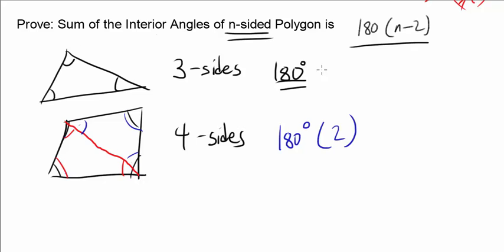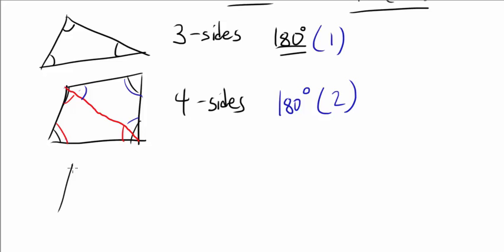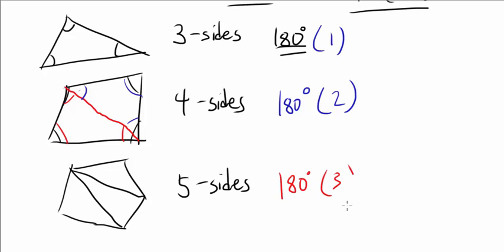So for the triangle, it was 180 times 1. Let's remember that. How about for 5 sides? For the 5 sides, we can divide it into 3 triangles, so the sum of the interior angles is going to be 180 degrees times 3.